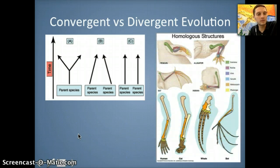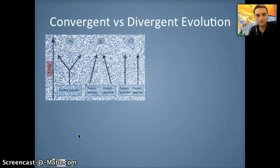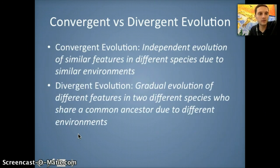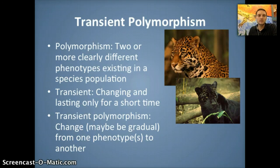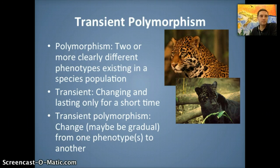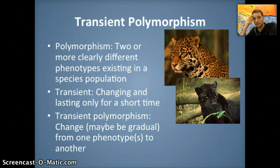Homologous structures lead to divergent evolution, as we discussed. Here are definitions for both convergent and divergent evolution for your notes. The next topic is transient polymorphism — a process that produces two or more clearly different phenotypes within a population. The word transient means changing or lasting only a short time, so transient polymorphism is the gradual change from one phenotype to another within a population.